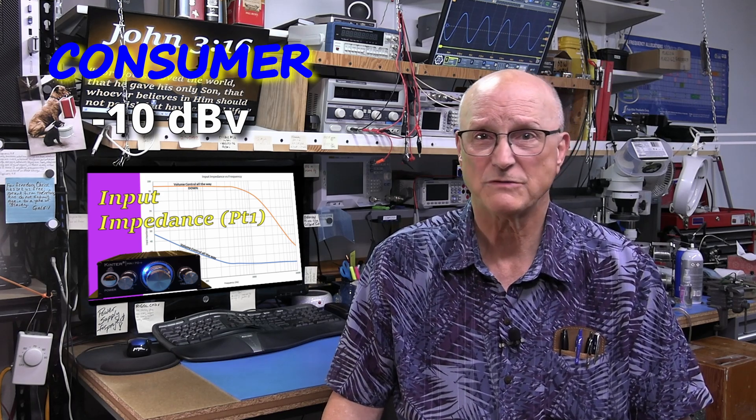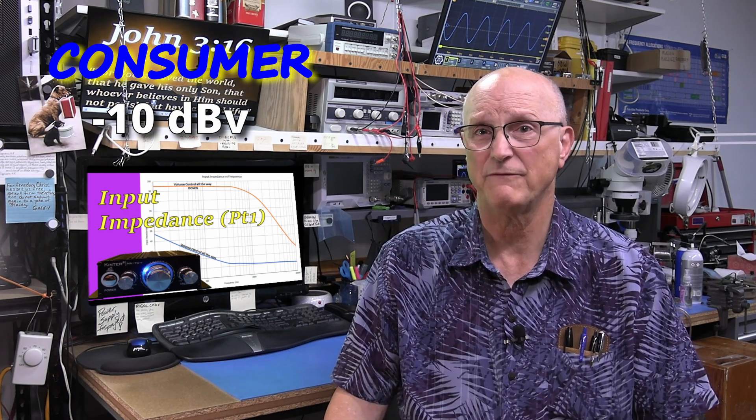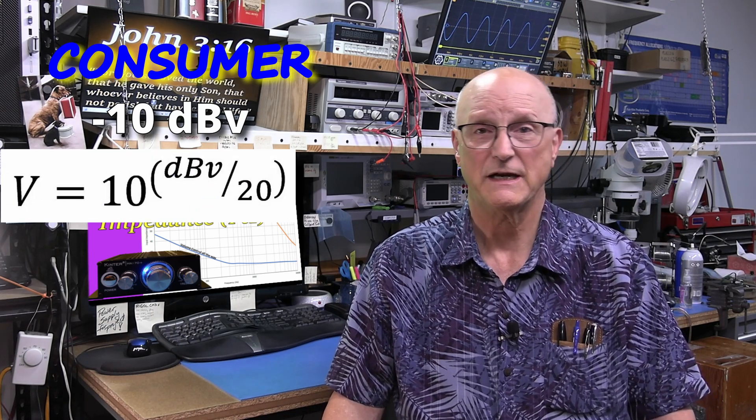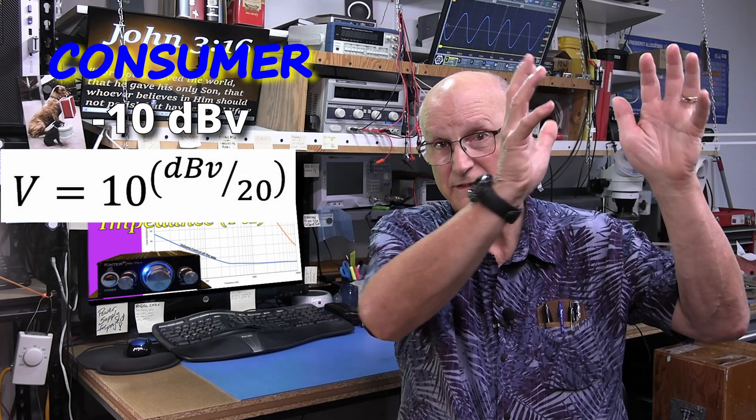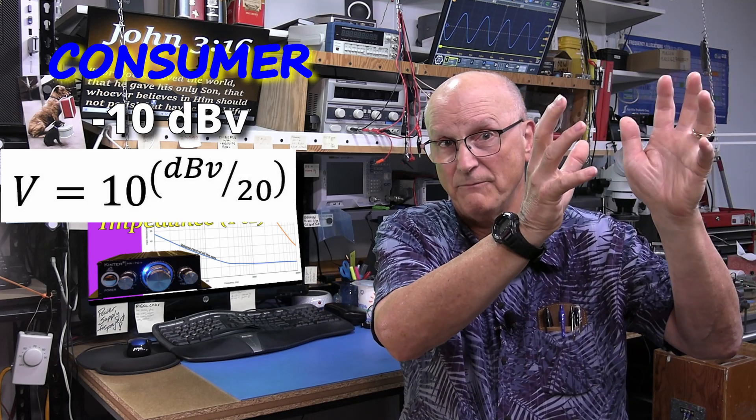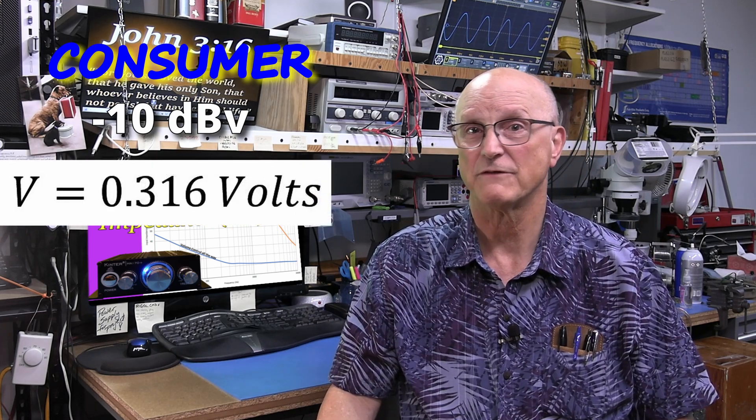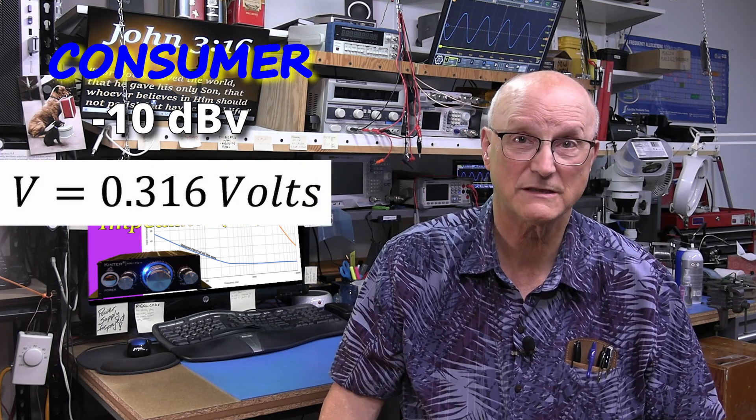Now I have to turn this into a voltage by rearranging the dBV equation. This gives me that voltage is equal to 10 brought to the dBV over 20 power. And if we stick our minus 10 dBV into this, we get a voltage of 0.316 volts.